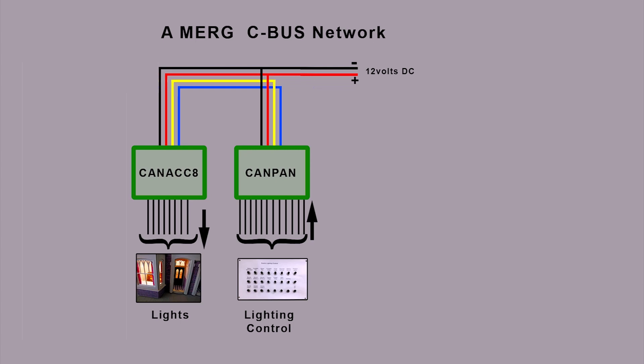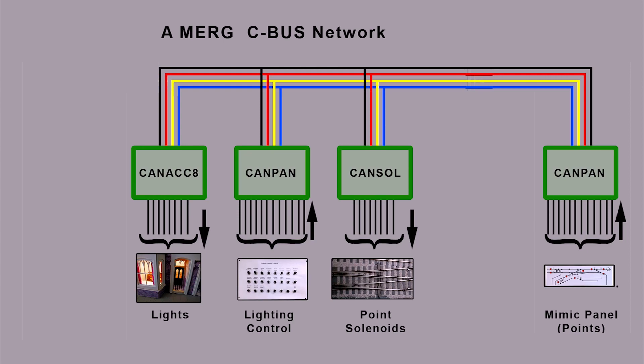So that's our first basic setup for lighting — a pretty straightforward system. If we double that up, we can do something very similar using another CAN-PAN whose switches are on a mimic panel, which controls the points. Pressing a button on the mimic panel sends a signal from that CAN-PAN onto the CBUS. The instructions on the CBUS go to every node, but because of how it's programmed, only the CAN-SOL interprets that particular instruction. The CAN-SOL is a solenoid driver for point motors, so pressing buttons on the mimic panel can control up to 8 point solenoids using the CAN-SOL node.